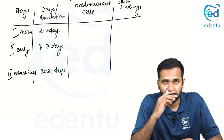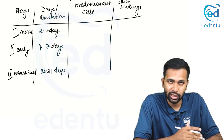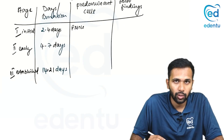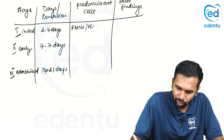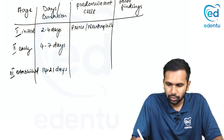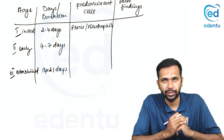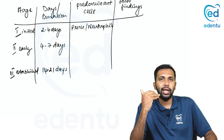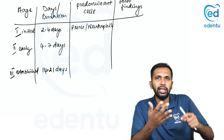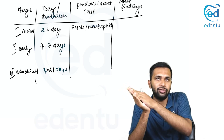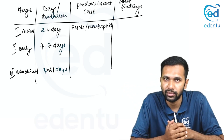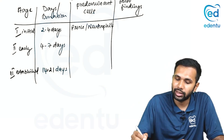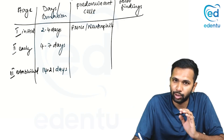The predominant cells associated with stage 1 gingivitis are PMNs — that is, your neutrophils. Please remember: for any inflammation or any challenge, the first line of defense is always your neutrophils. The first cells that go and attack are always your neutrophils. That is why in stage 1, you have neutrophils.